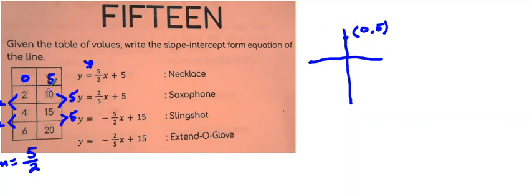Well, guess what? That is the y-intercept. So it would be 5 halves of x plus 5. And that is the equation that fits. So necklace is not what was used to get those donuts. Necklace is the answer.